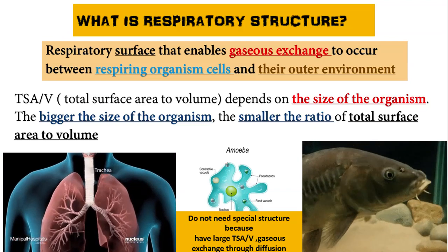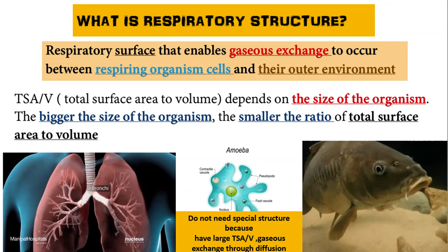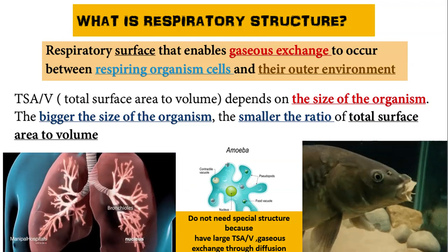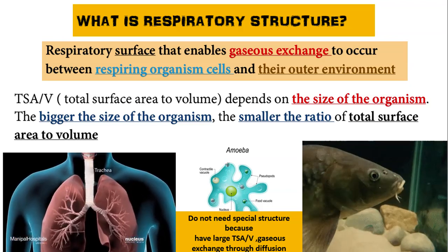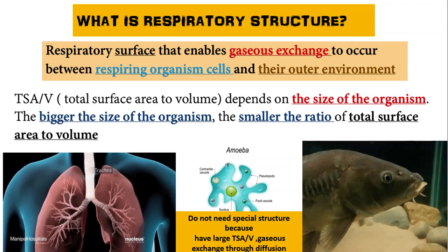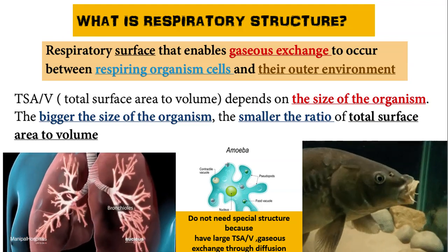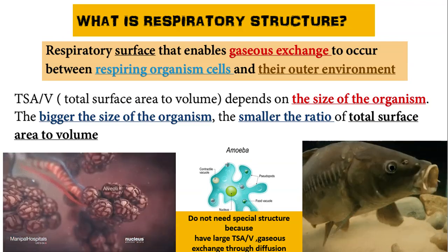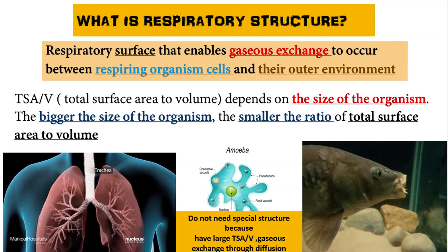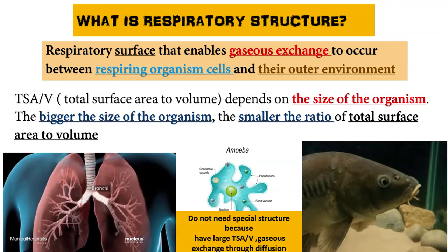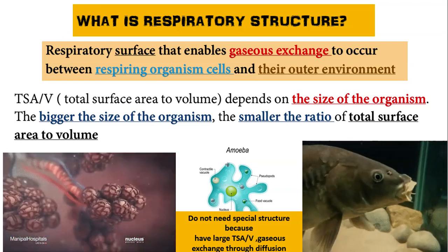In this topic we will discuss how the ratio of total surface area to volume (TSA/V) depends on the size of the organism. The bigger the size of the organism, the smaller the ratio of total surface area to volume. This explains why large and complex organisms cannot maintain gas exchange by diffusion through the body surface only, and therefore require a special respiratory structure for the efficient exchange of gases.